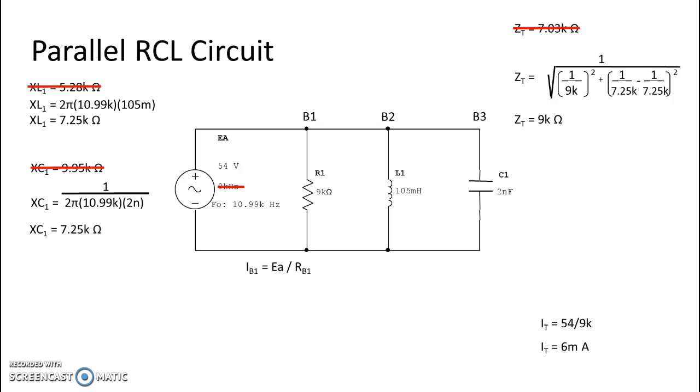We look at our individual branch currents. We still have that same 6 milliamps through our resistor and you will also notice that because the ohmic value for the circuit is resistor one,